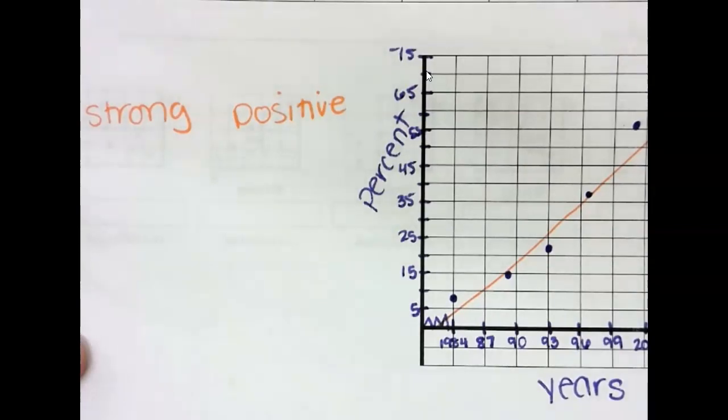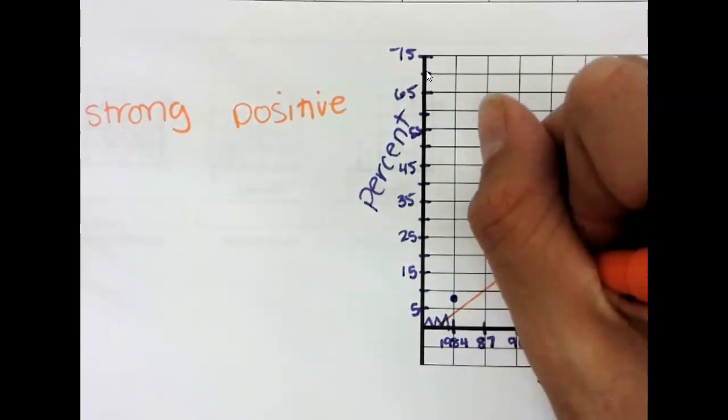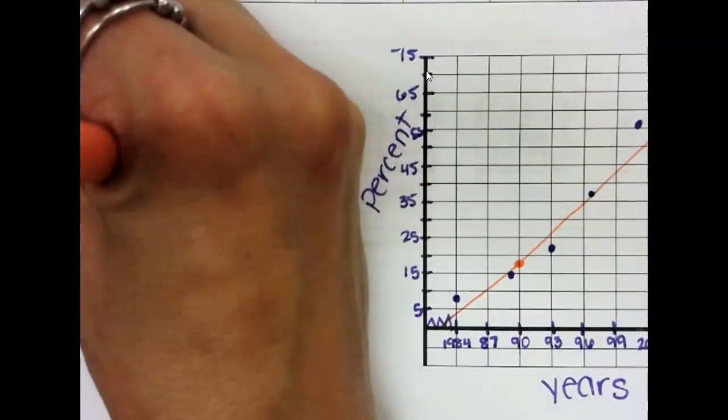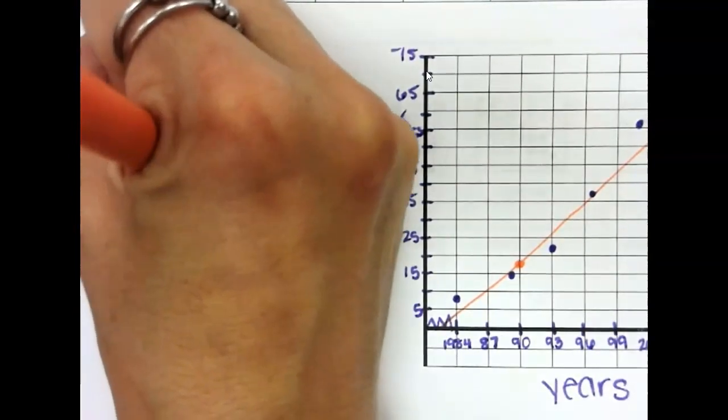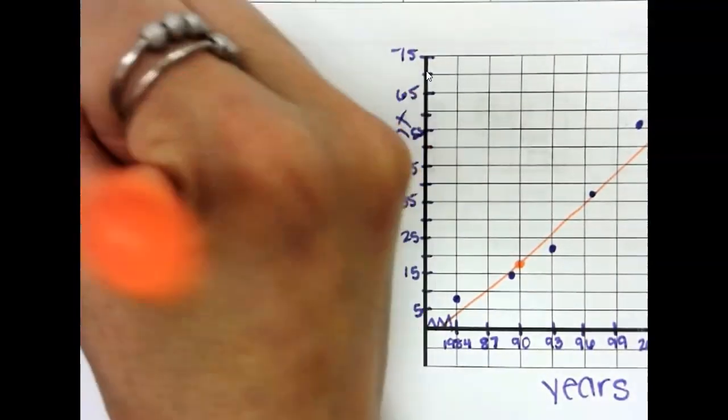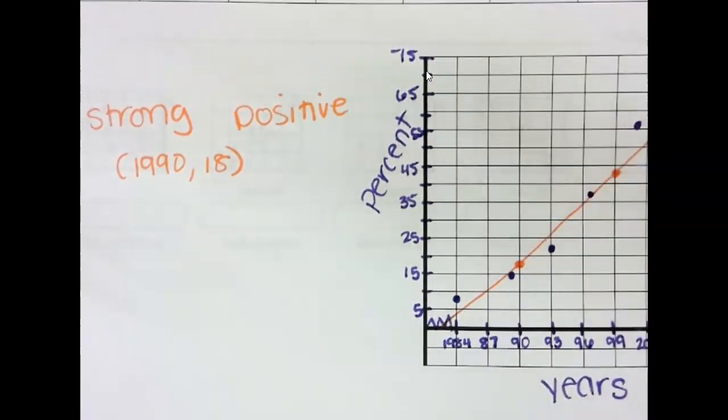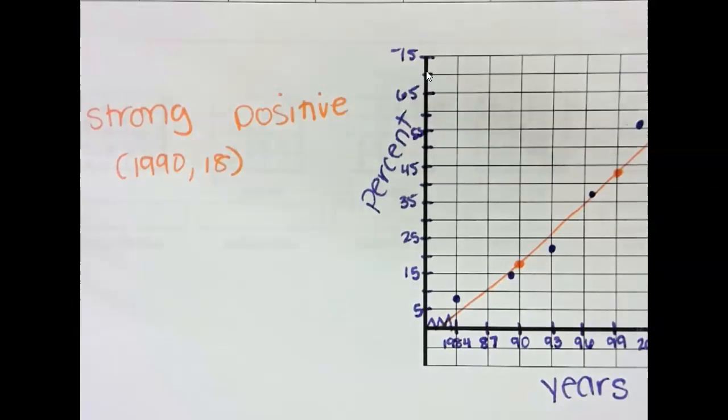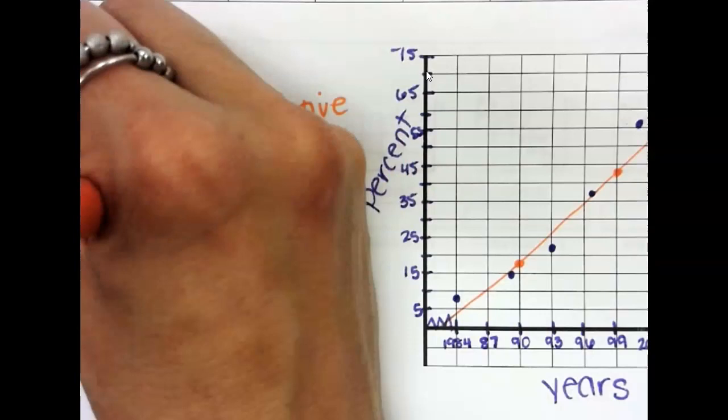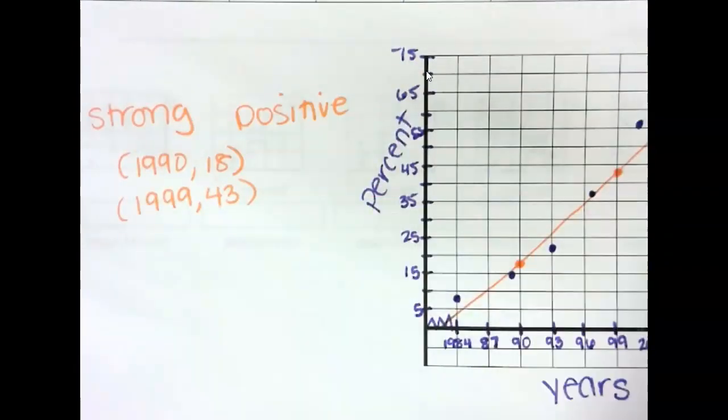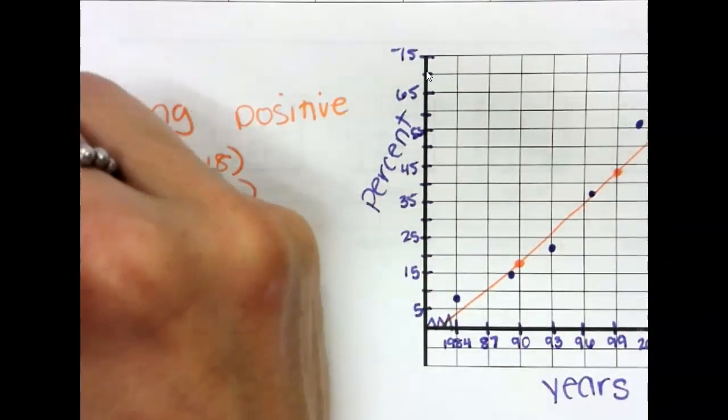And then you just want to pick points on your graph. So, I could pick 1990 and say that that's like 18. I could pick maybe 1999 and say that that's perfectly in between 40 and 45. So, maybe I'd say 43. Find my slope.